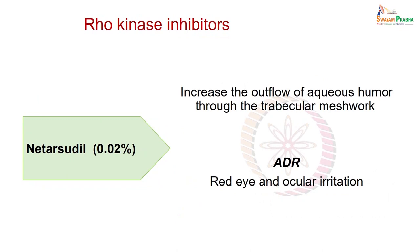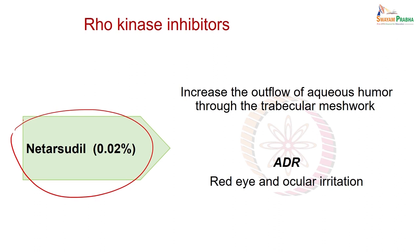Rho kinase inhibitors have been found to increase the outflow of aqueous humor through the trabecular meshwork. The drug in this category is netarsudil, and adverse reactions again include red eye and ocular irritation.